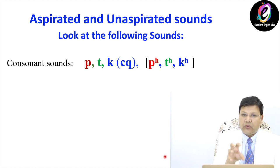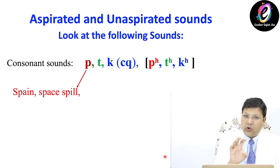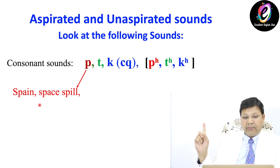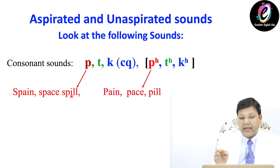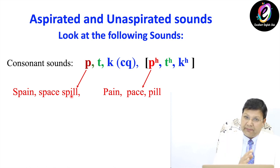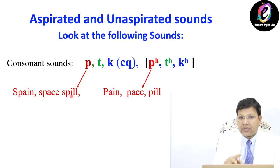I will let you know today how you can pronounce these three letters in different places. These are the three consonants I have taken from those 24 consonants — these are plosive sounds: Pa, Ta, Ka. These are voiceless sounds. Look: Pa as in Spain, Pa as in space. Now in the second group, Pa as in pain, Pa as in pace, and Pa as in pill. Here I am saying Pa, Pa, Pa — and on the right side I am saying Pha, Pha, Pha.